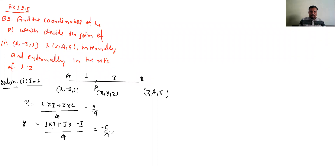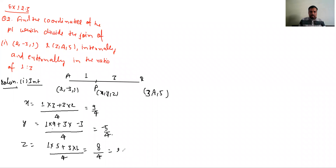3 into minus 3 divided by 4, matlab 4 minus 9 = minus 5 by 4. Next ho gaya Z equal to (1×5 + 3×1) divided by 4, matlab 5 plus 3 = 8 by 4, matlab ho gaya 2.